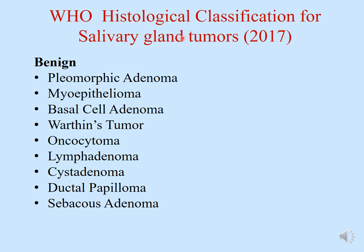According to the WHO histological classification for salivary gland tumors, revised in 2017, the benign tumors include: pleomorphic adenoma (the most common), acinic cell carcinoma, myoepithelioma, basal cell adenoma, Warthin's tumor, oncocytoma, lymphadenoma, cystadenoma, ductal papilloma, and sebaceous adenoma.